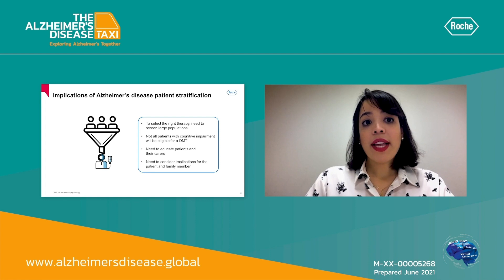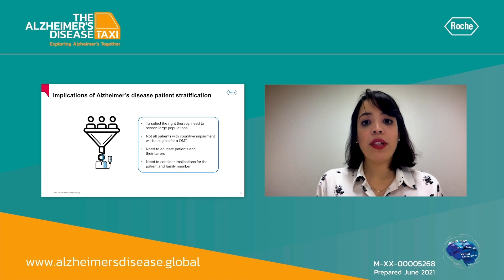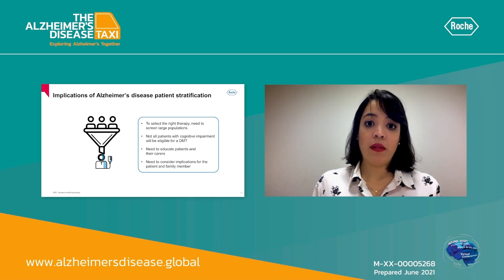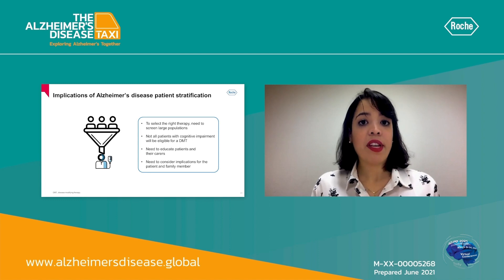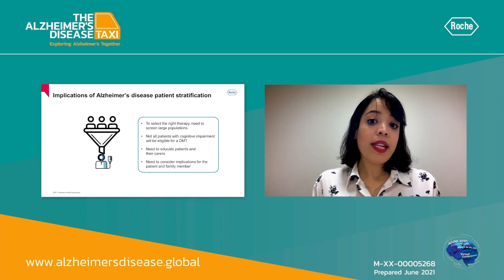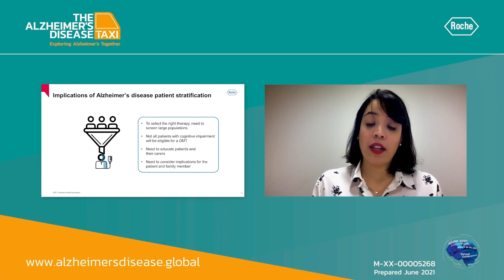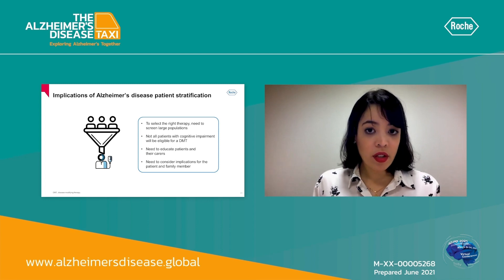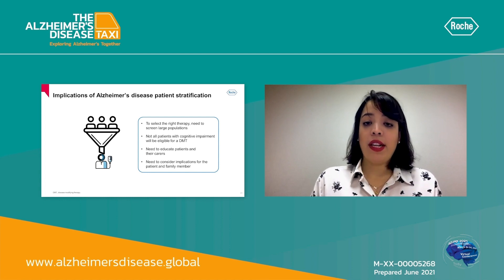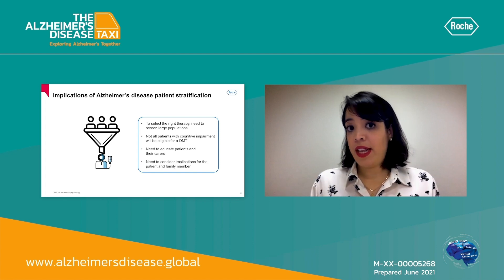What are the implications of Alzheimer's disease patient stratification? First, we will need to screen a wider population in order to select the right patients, because not all patients will be eligible for these types of treatments. We will also need to educate patients and their carers about the diagnostic process — how we conduct it — and inform the patient and families about the results very carefully. For example, the APOE genotype could have implications for the family as well.